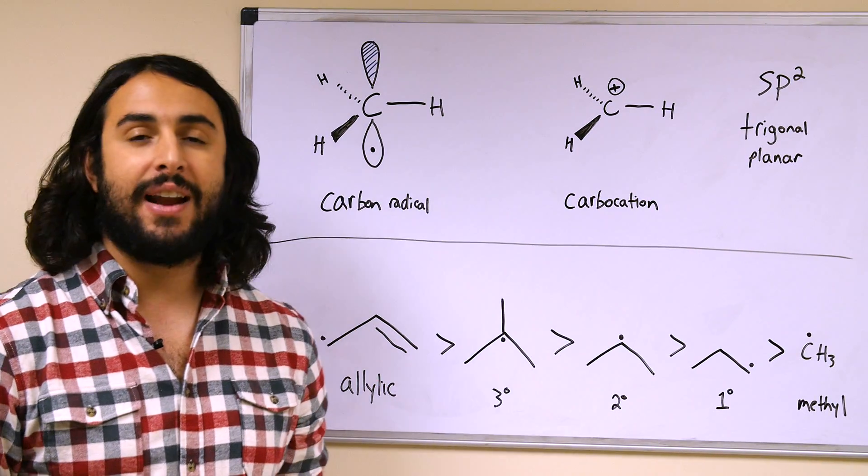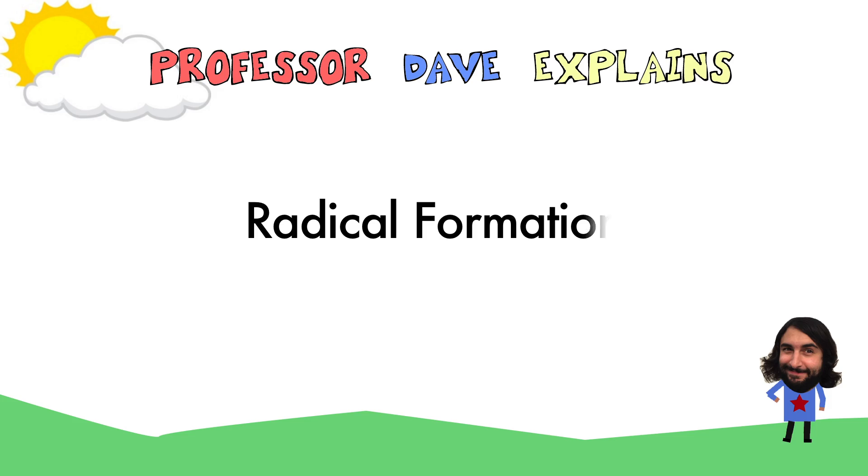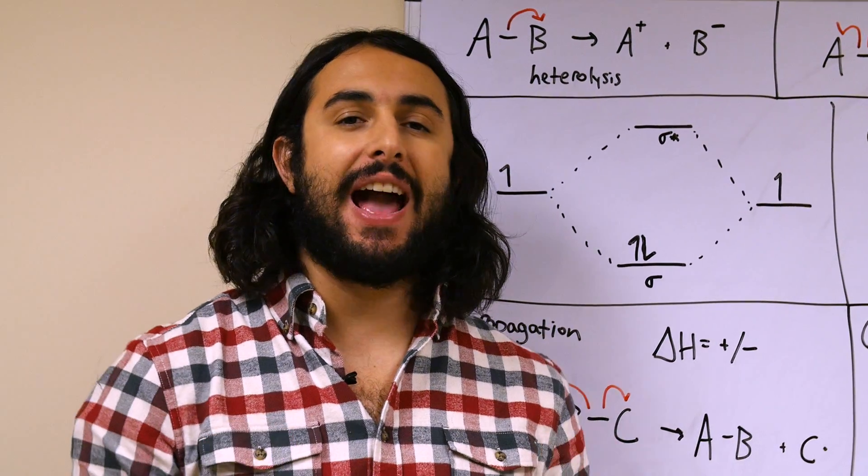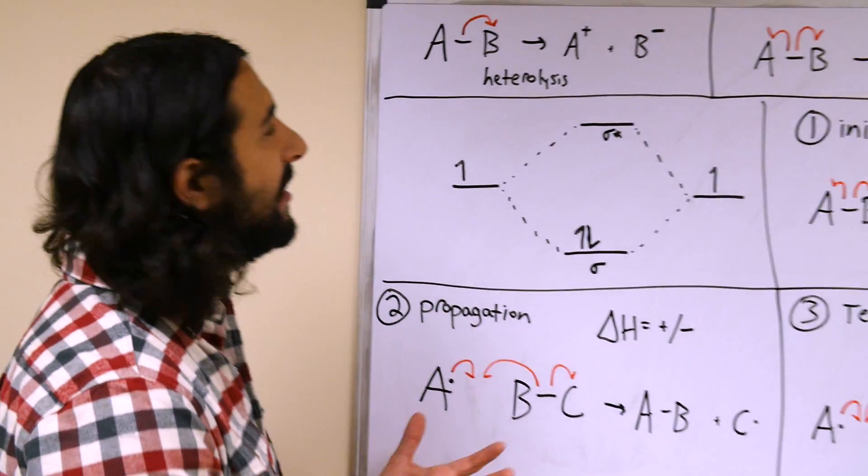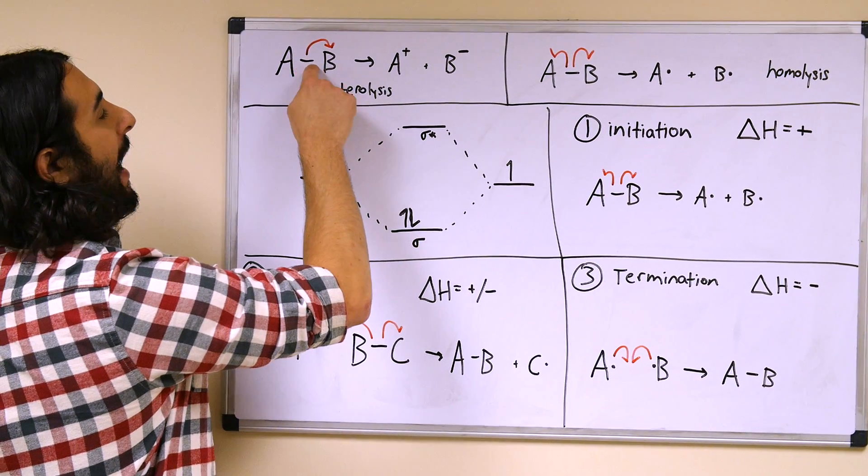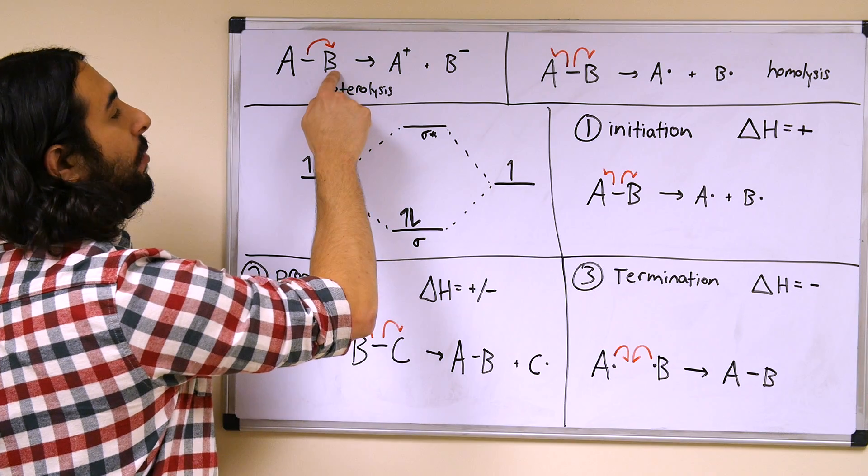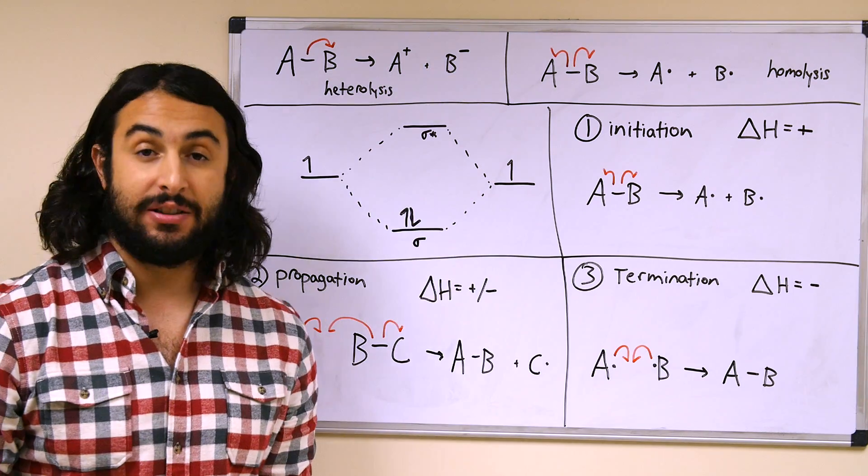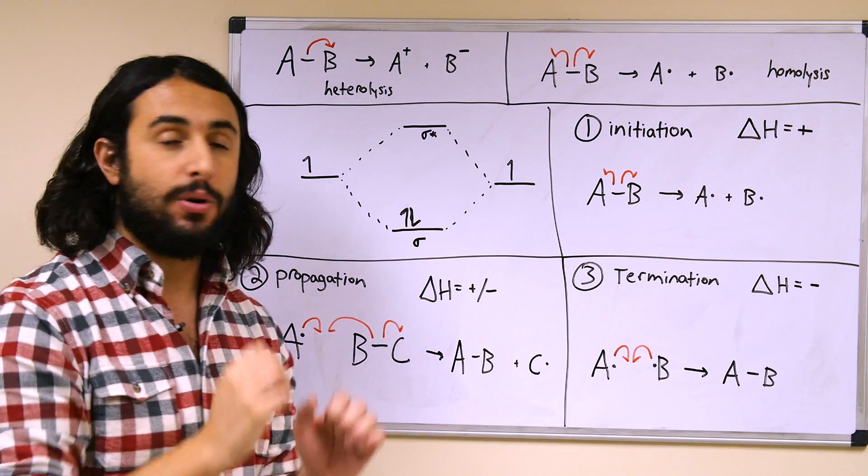Now let's take a look at how radicals form. So up until now when we've seen electrons rearranging we're used to seeing heterolytic bond cleavage, so this is something like, let's say, a leaving group leaving a molecule, so the pair of electrons would leave with one of the atoms and we'd have a cation and an anion. That's heterolysis, right? That is a pair of electrons moving.